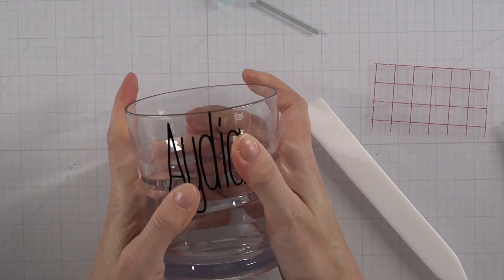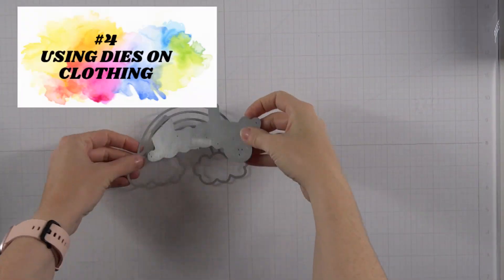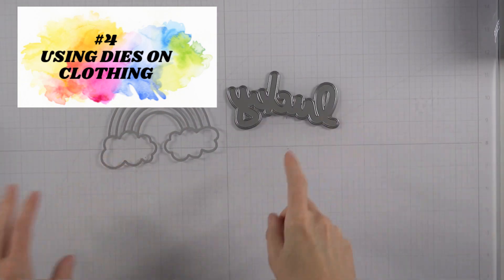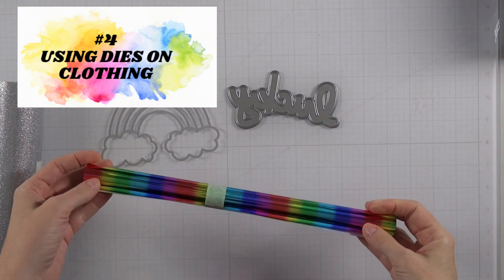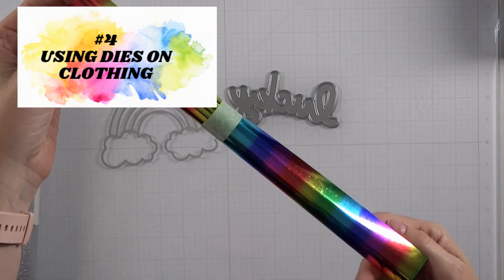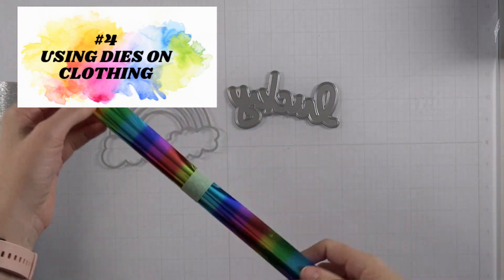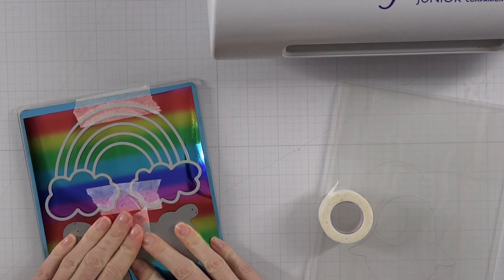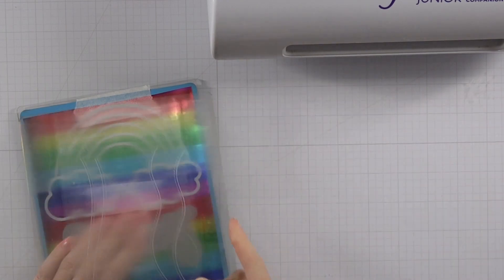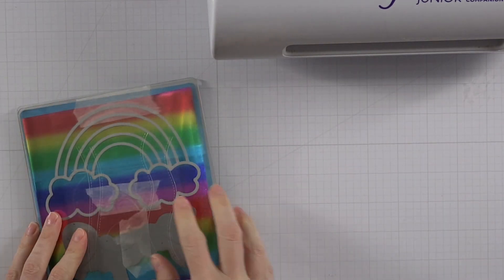I already put them through the dishwasher. It came out unscathed completely, so it's really good for this idea. Now let's pull out some of those dies that we have for paper crafting and card making, but we would love to see them on a piece of clothing. That's what we're going to do next.